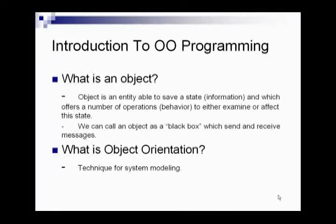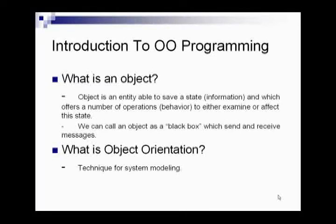We can call an object a black box which sends and receives messages — it means it is very abstract. The user is not given a clear visible inside of the object; they can just send inputs to the object by a message and get the output as a message. It is very convenient.